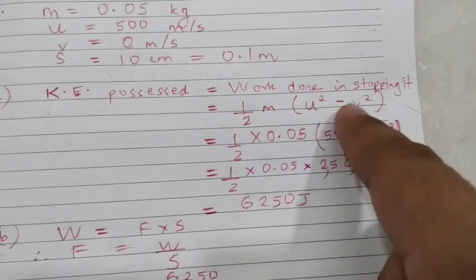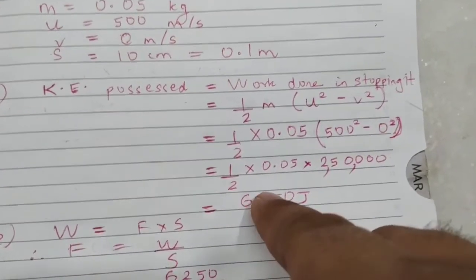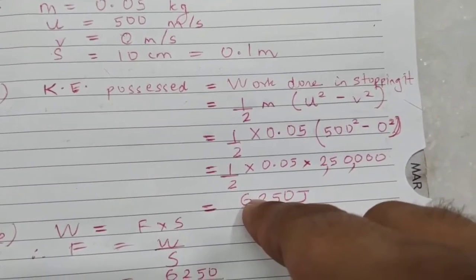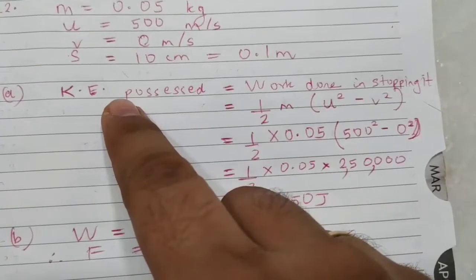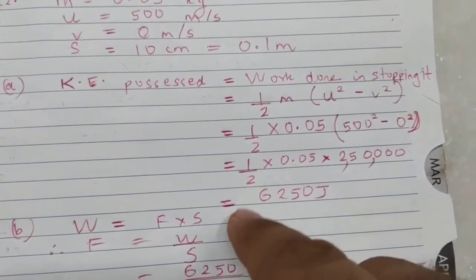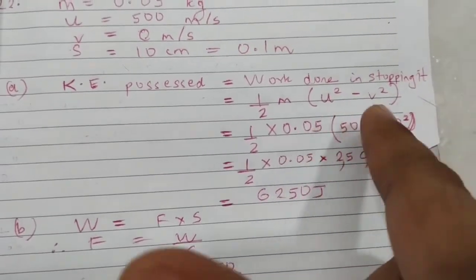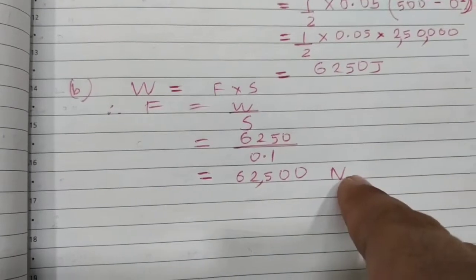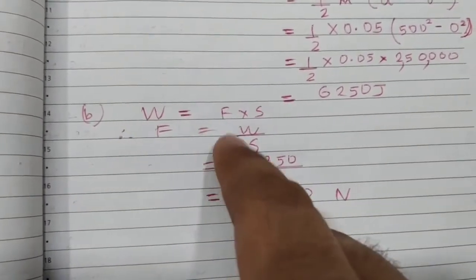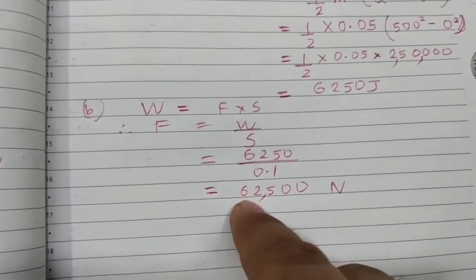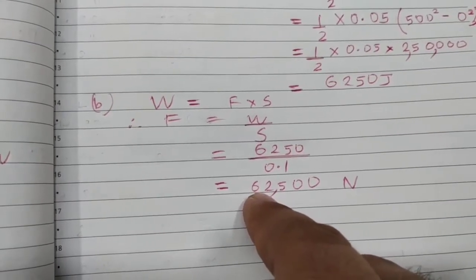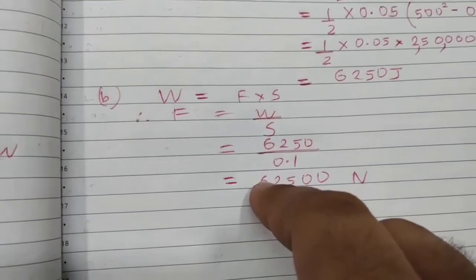For the retarding force: force equals work upon displacement. Substitute the values to get the answer. The work done was negative since it is retardation, so the force is also negative — meaning the force is applied opposite to displacement. Since we already said retarding force, it is understood to be negative, so no need to worry about the negative sign.